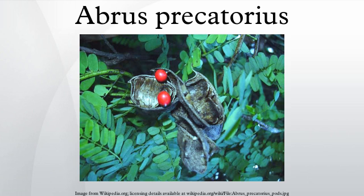Abrus precatorius, known commonly as jacquiriti, crab's eye, rosary pea, precatory pea or bean, john crow bead, Indian licorice, akarsaga, jiddi-jiddi or jumbi bead in Trinidad and Tobago.